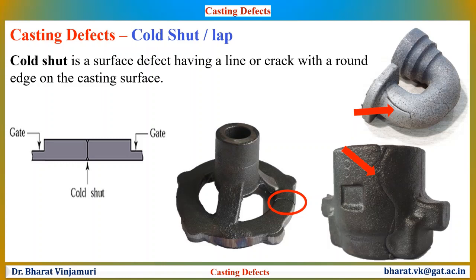The best way to prevent cold shut is to increase fluidity of the molten metal. This can be done in a few ways: optimize the gating system to minimize narrow cross paths and ensure short flow paths; increase the pouring temperature to prevent premature solidification; and improve gas permeability of the mould.